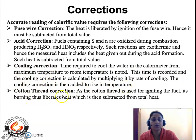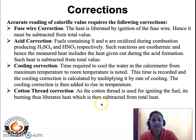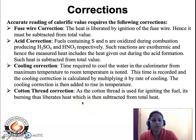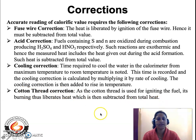The fourth correction is the cotton thread correction. In some bomb calorimeters, a cotton thread is used for igniting the fuel. During burning, the cotton thread catches fire and also combusts, liberating a certain amount of heat that gets added to the measured GCV. This cotton thread correction must therefore be subtracted from the total heat.